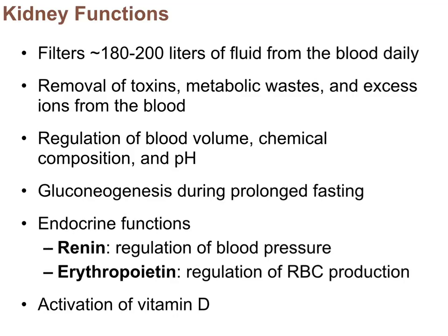Chapter 25, this is the urinary system. We'll be covering the anatomy and physiology throughout this presentation. The kidneys function as a filtration system for the blood, filtering 180 to 200 liters of fluid every day. They remove toxins, metabolic wastes, and excess ions like potassium. Another function is helping regulate blood volume, the chemical composition of the blood, and blood pH — there's a pH buffer system that the kidneys have.